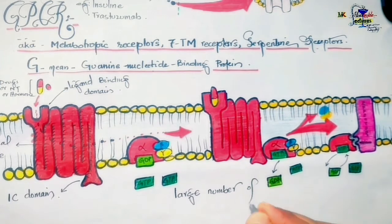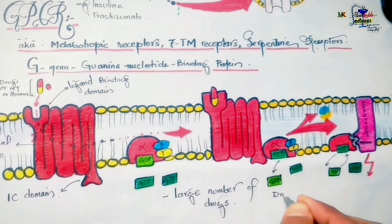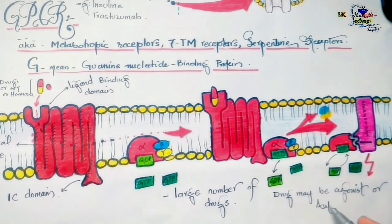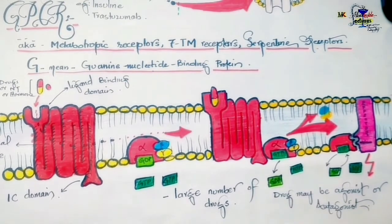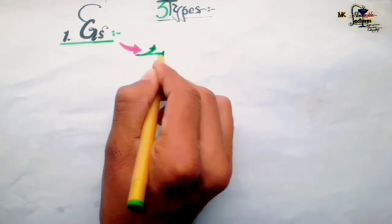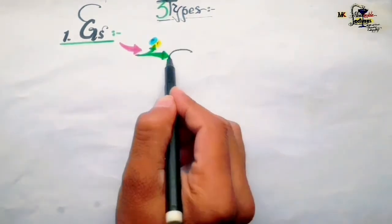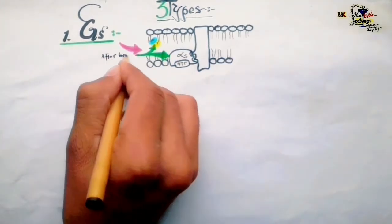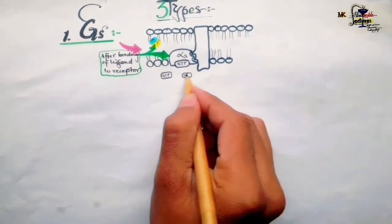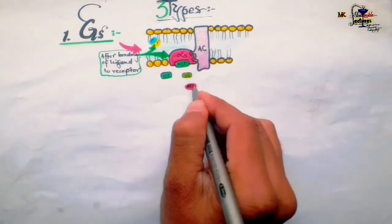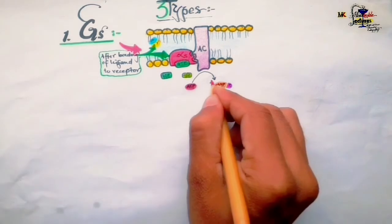A large number of drugs act by this mechanism. The drug acting at the receptor is called an agonist, and antagonists interact at the same site to block drug binding. GPCRs are further divided into three types. The first is Gs protein-coupled receptors, which are stimulatory in nature and increase cAMP levels inside the cell. When a ligand binds, the alpha subunit of Gs interacts with adenylyl cyclase, which converts ATP to cAMP and inorganic phosphate.